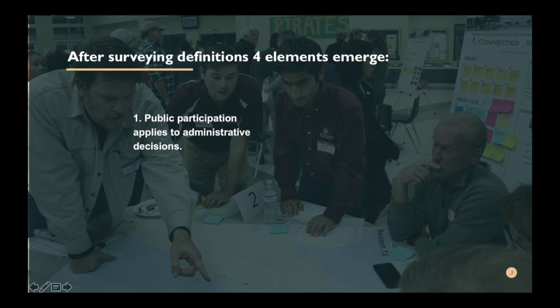Number one: public participation is a criteria applied by an administrative body, which could be government, non-profits, or even a business or association, with the idea of achieving public input. By administrative body, it does not have to mean publicly elected officials — it can be any agency, including the staff. So when you're a planner, you will be a decision maker as well.